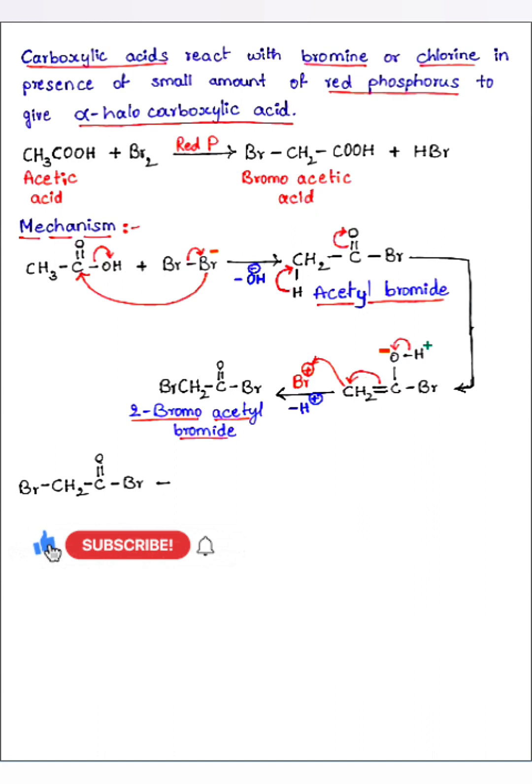Now this 2-bromo acetyl bromide is reacting with one more acetic acid molecule and forming bromo acetic acid as a product. Let us see, in this particular reaction there is an exchange between these two. This OH is replaced with Br and Br is replaced with OH. We get bromoacetic acid, that is nothing but alpha substituted acid as a product.